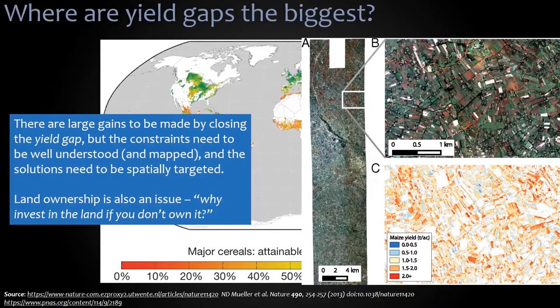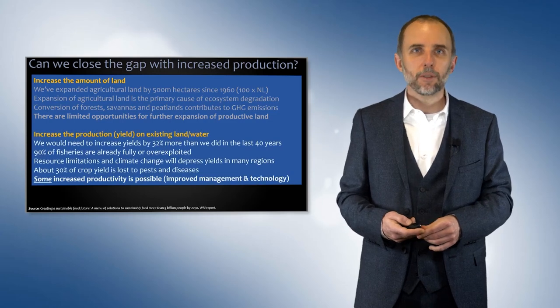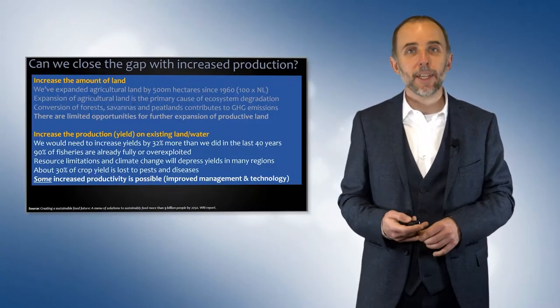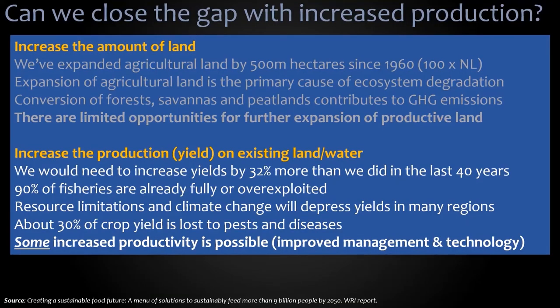Zooming into some details here showing high-resolution remote sensing imagery, you can see the spatial variation in yield for maize fields ranging from high yield in red to lower yield in blue. Understanding that spatial variation is a big part of being able to close the yield gap. We said increasing the amount of land is not really an option, but increasing production on existing land could be an option — though we'd need to increase yields by 32% more than we did in the last 40 years.